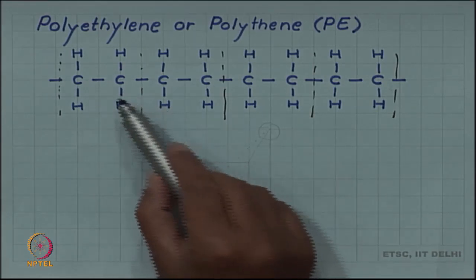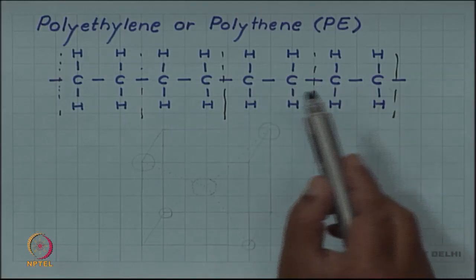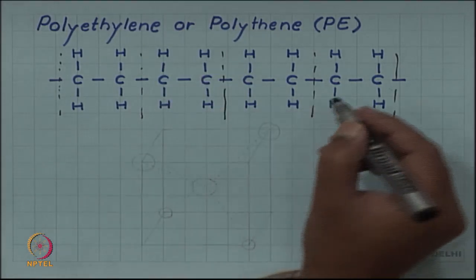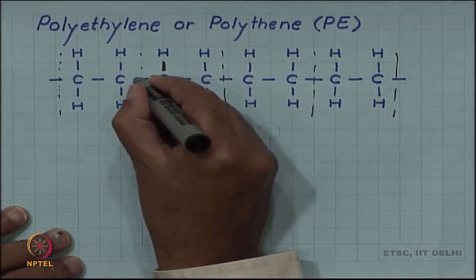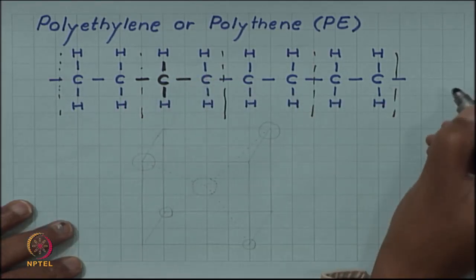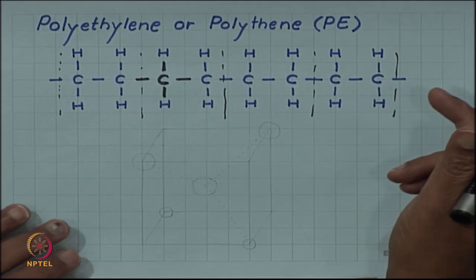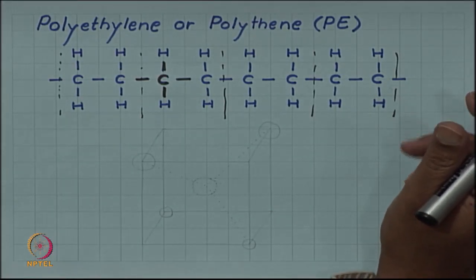I have drawn it here in a planar way, which is a simple way of drawing, but one should recognize that the bonds of carbon, if I take a single carbon, the four bonds of carbon are not in a plane. They are directed from vertices to the corners of a tetrahedron - they are tetrahedral bonds.